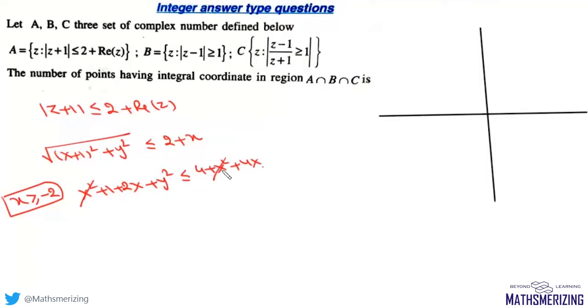We can write this as y² is less than or equal to 2x + 3, or y² is less than or equal to 2(x + 3/2).